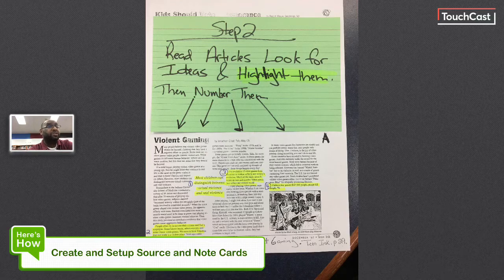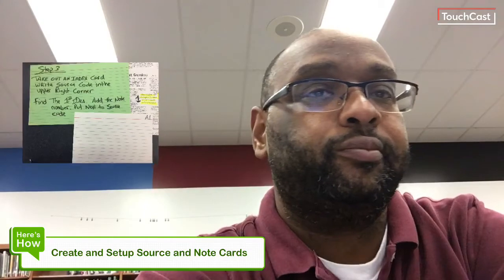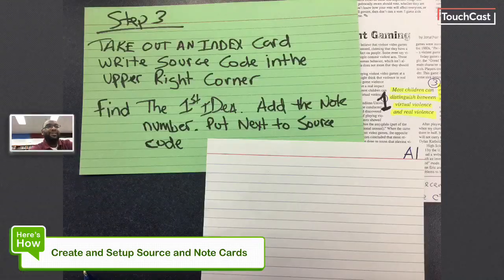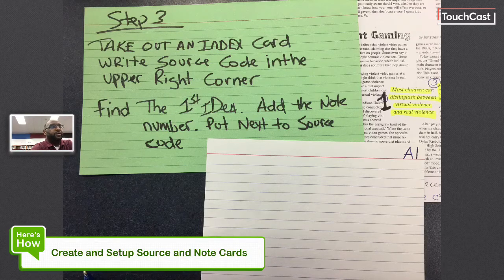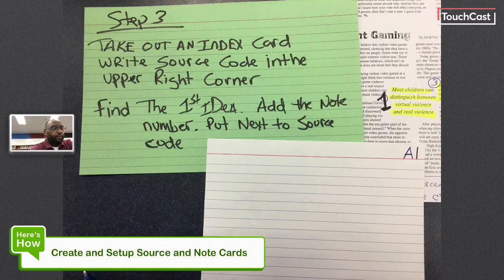Once you're done with the article, you've skimmed it and read it and highlighted your ideas — step three is to open up your index card bundle. In the upper right corner you're gonna write A1 on that card. You're gonna find the first idea you highlighted. In my example, the first idea I highlighted was: most children can distinguish between virtual violence and real violence.